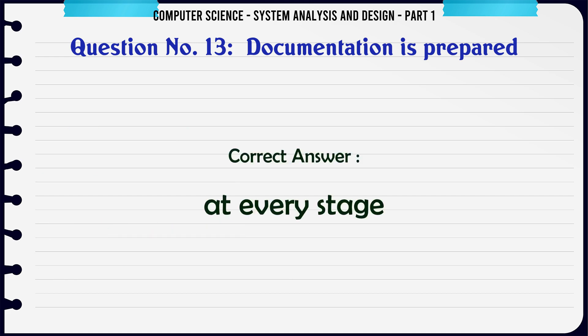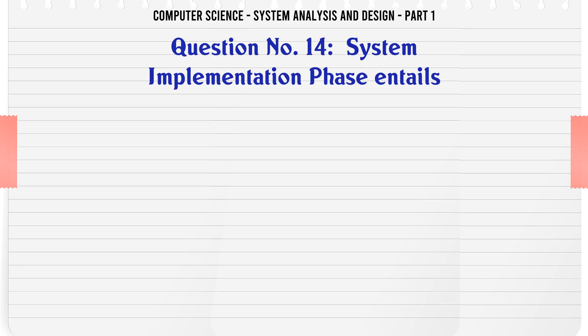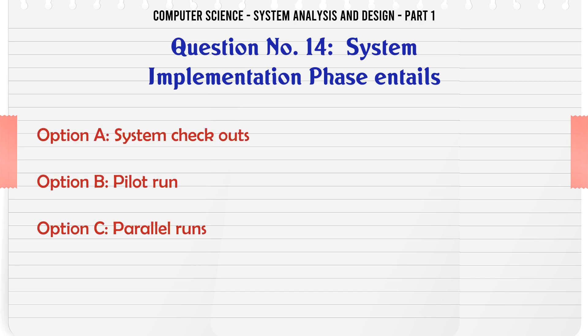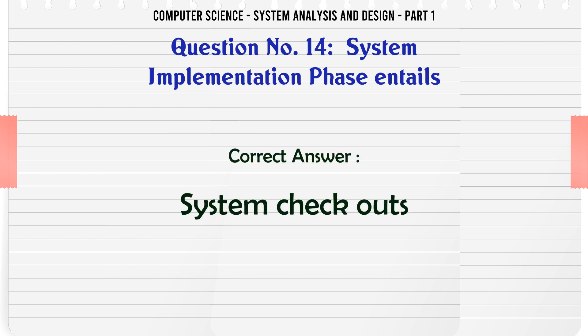System implementation phase entails: A. System checkouts. B. Pilot run. C. Parallel runs. D. All of the above. The correct answer is: System checkouts.